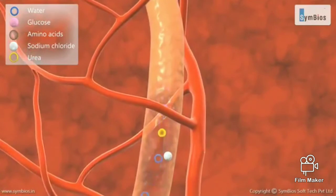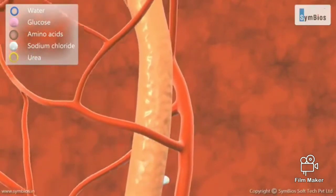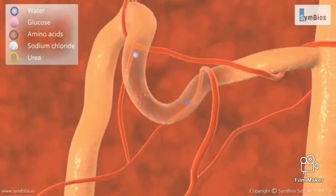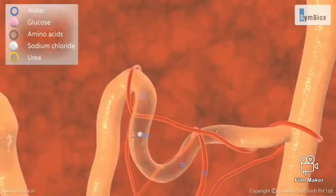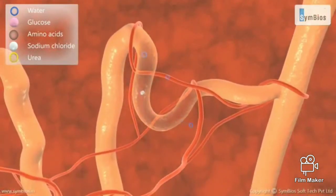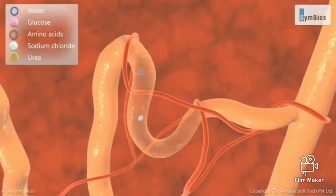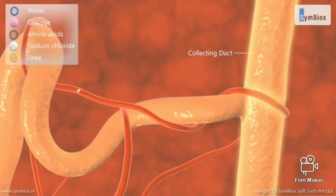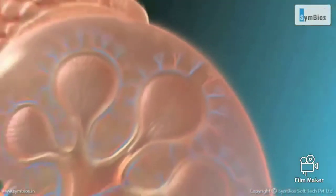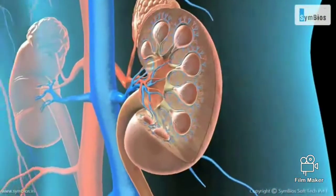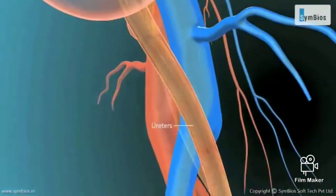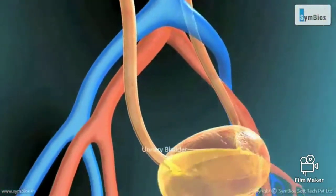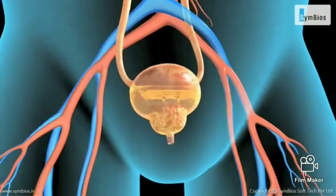Water and salts are absorbed in Henle's loop, and the remaining urine passes through the distal convoluted tubule, where some more water is reabsorbed into the blood. The concentrated urine then enters the collecting duct and passes through the ureter into the urinary bladder.